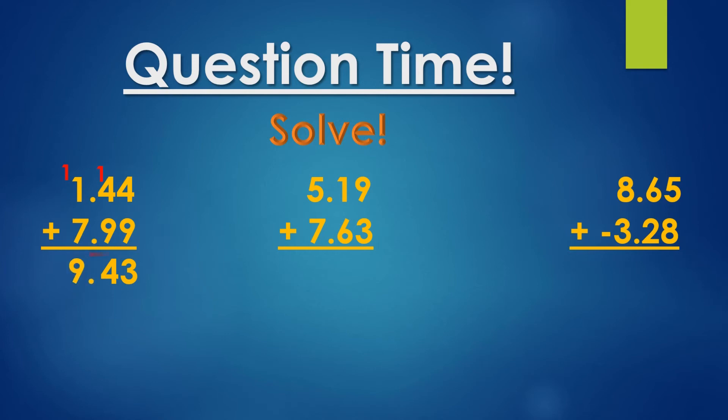Now our second question, 5.19 plus 7.63. So what's nine plus three? Twelve. Two on bottom, one on top. And two plus six is eight. Then five plus seven is twelve. Then our decimal falls to the bottom and our answer is 12.82.